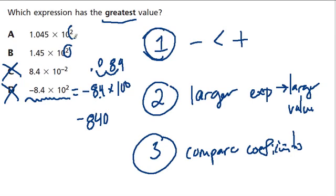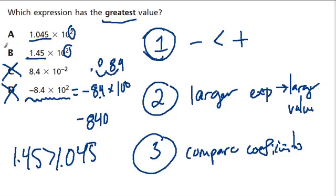Now these two have equal exponents, but one of them is the largest. So I compare the two coefficients. And 1.45 is greater than 1.045. So here, B is my answer as the greatest expression with having the greatest value.